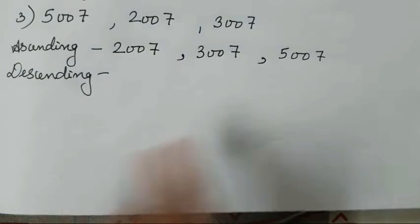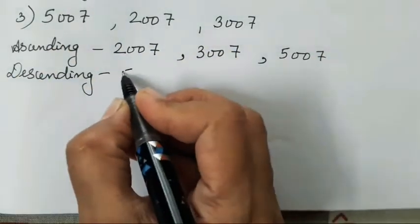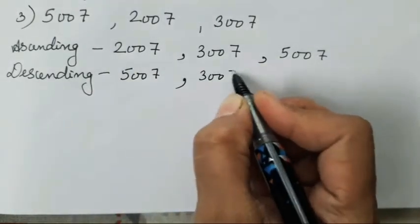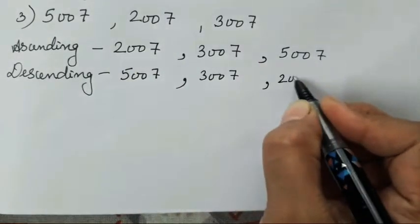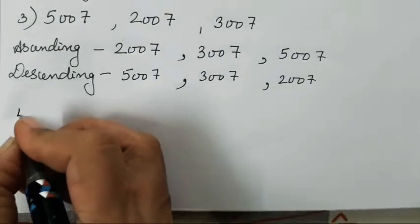And descending is the reverse. Directly you have to write the bigger to smaller, the reverse series. So 5007, 3007, 2007.